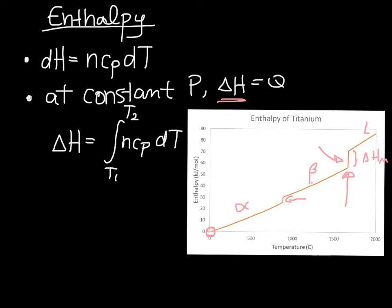From our equation for enthalpy as a function of heat capacity, the slope of the H vs. T curve is related to heat capacity: dH/dT = Cp. So the slope of the H versus T curve tells us about the heat capacity of the material.